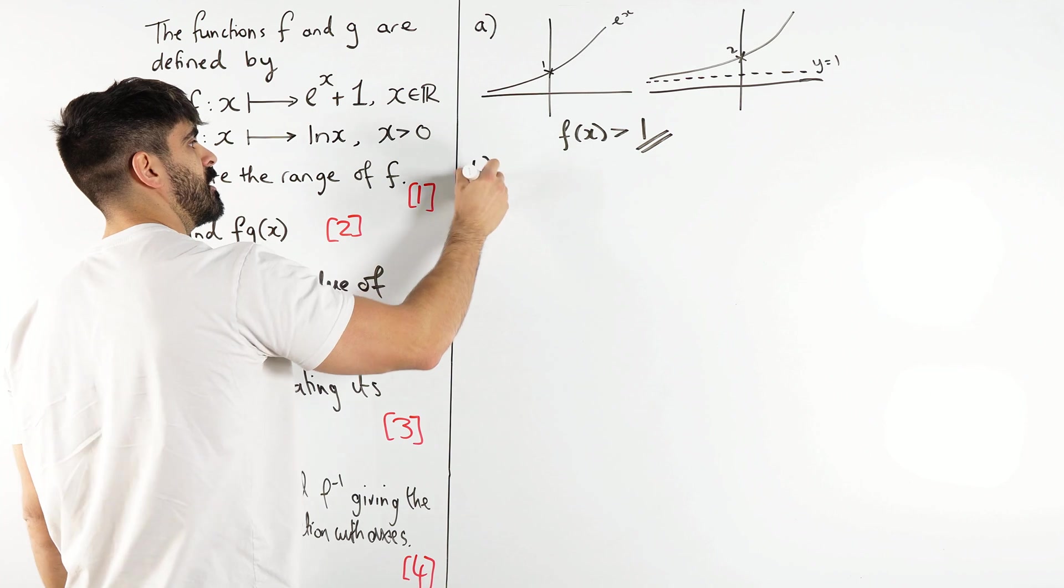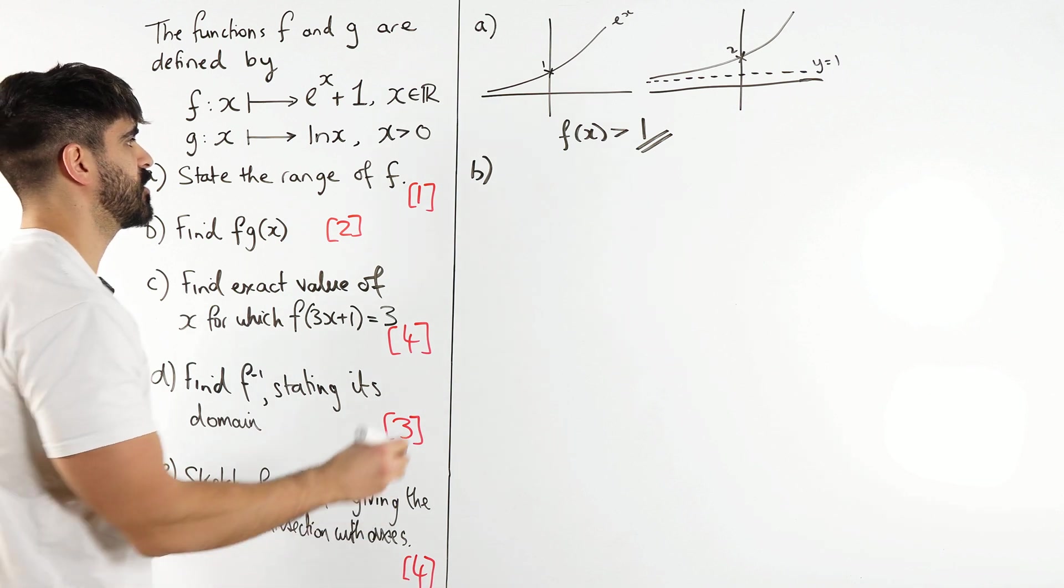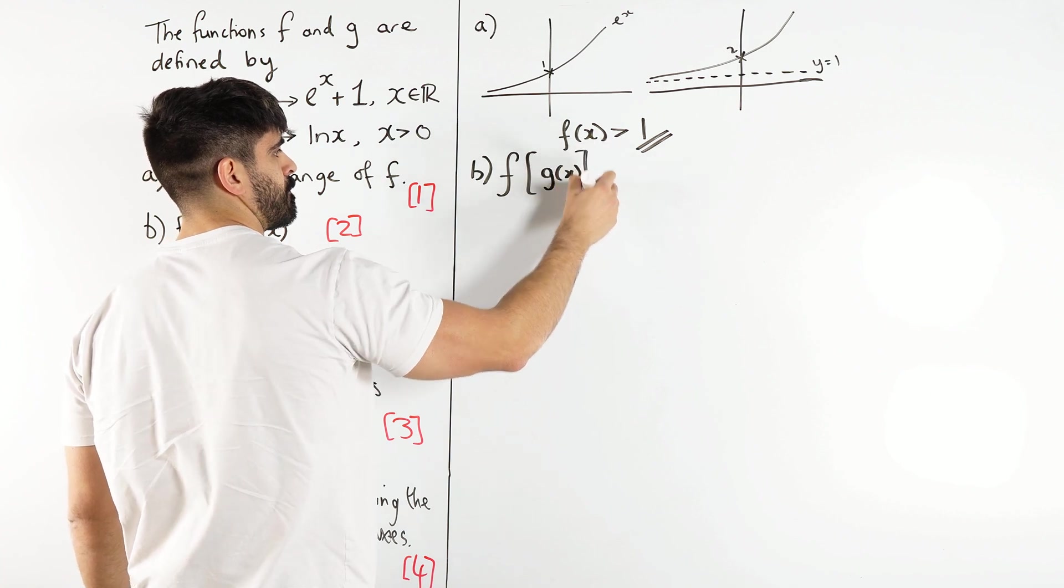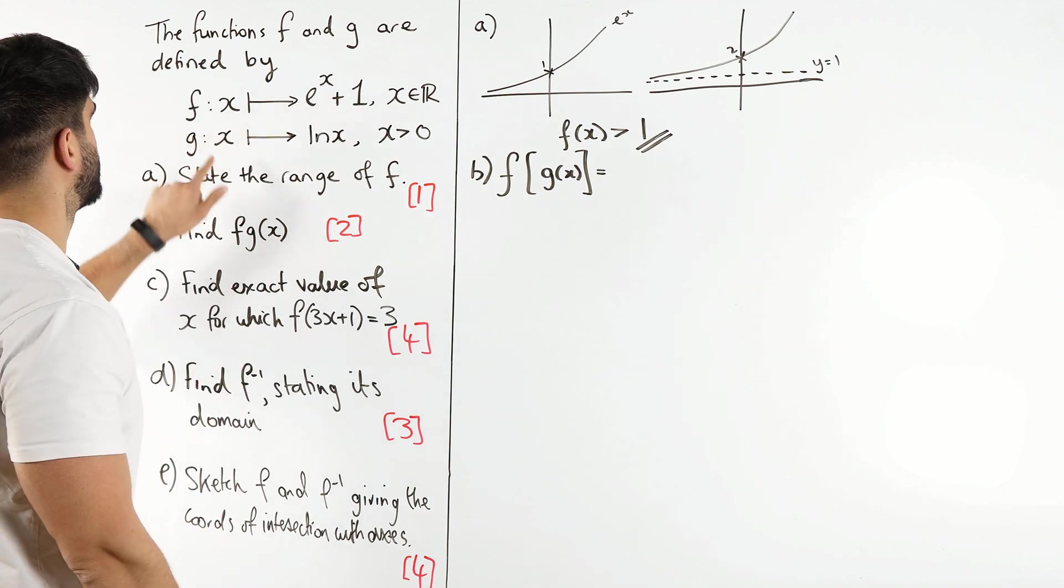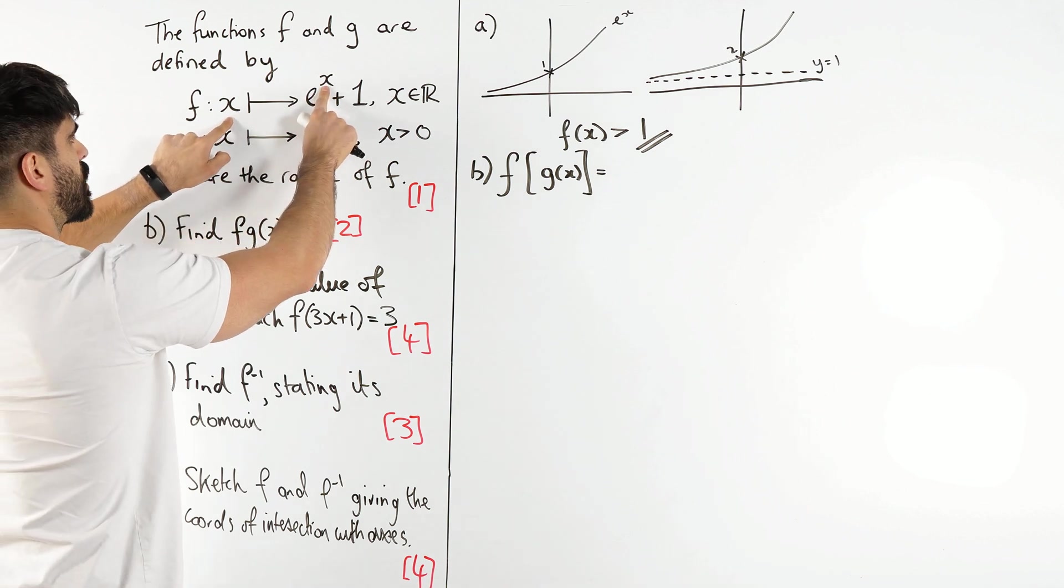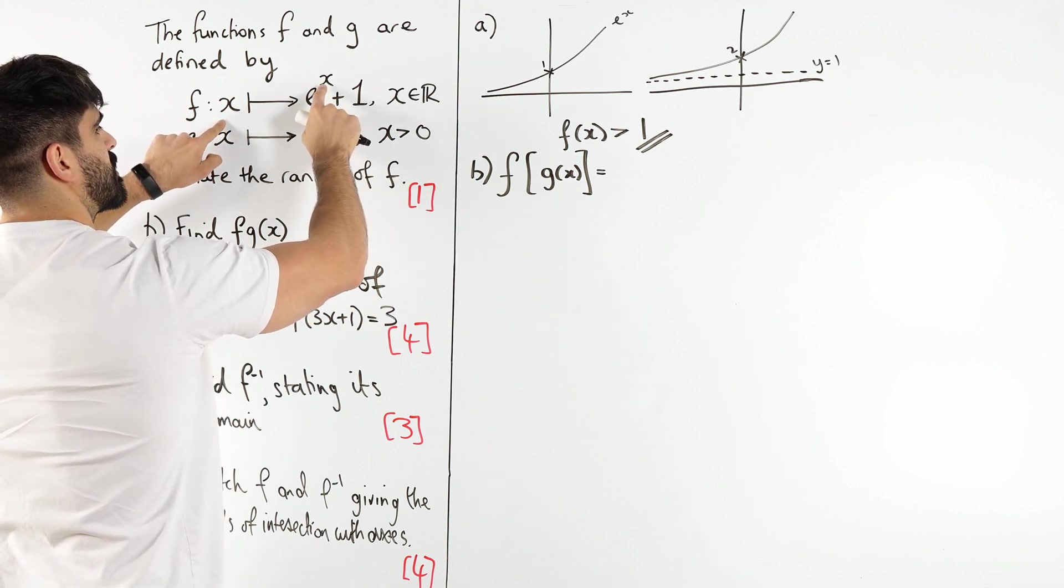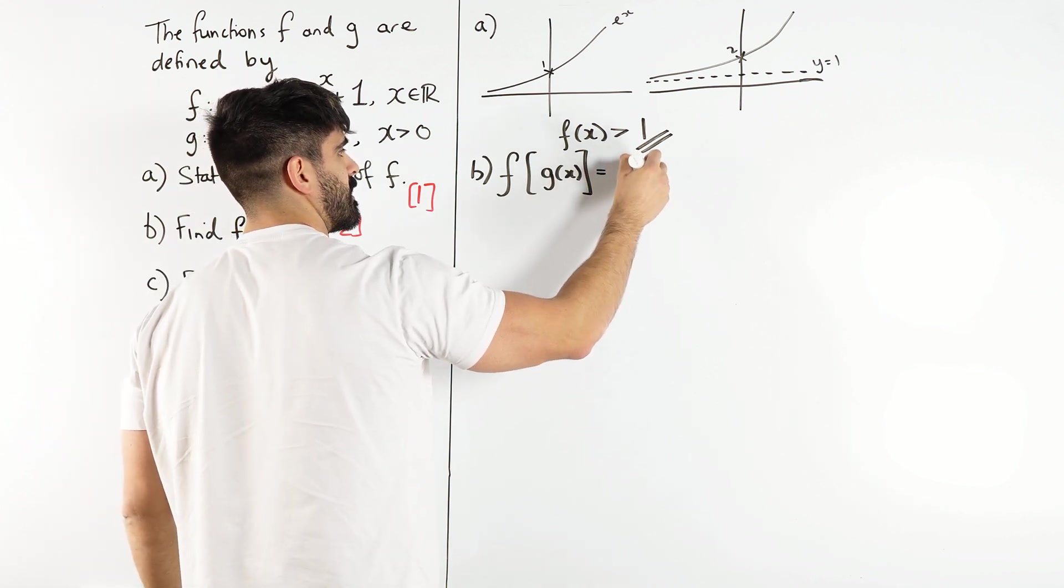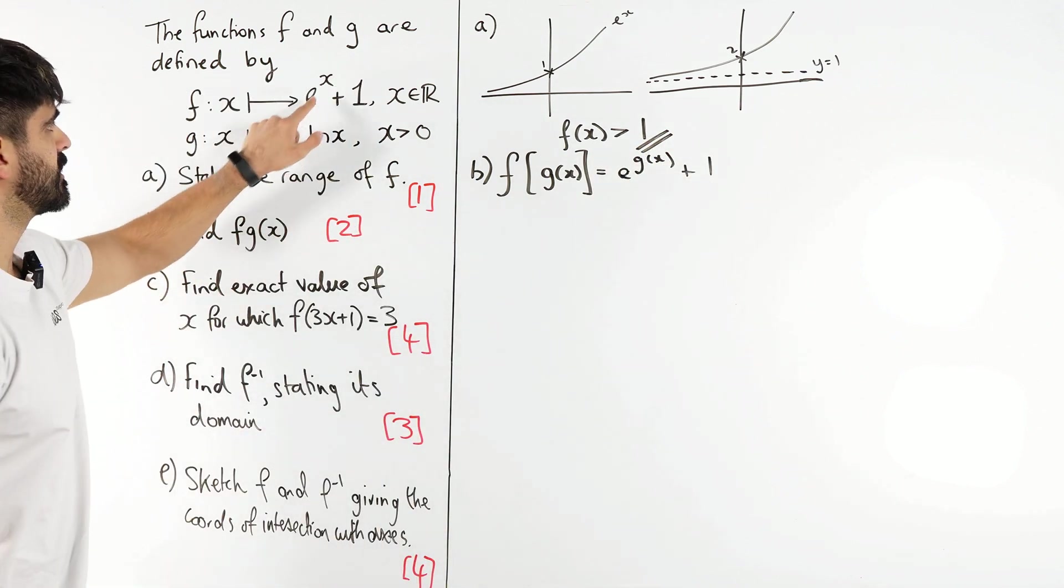Part B. Composite functions, find fg(x). Now this notation is saying f of g of x. So here we have f(x) = e^x + 1. We're doing f of g of x. So wherever you see x, you're now changing it to g(x). So I see x here, we're changing it to g(x). So we get e^(g(x)) + 1.